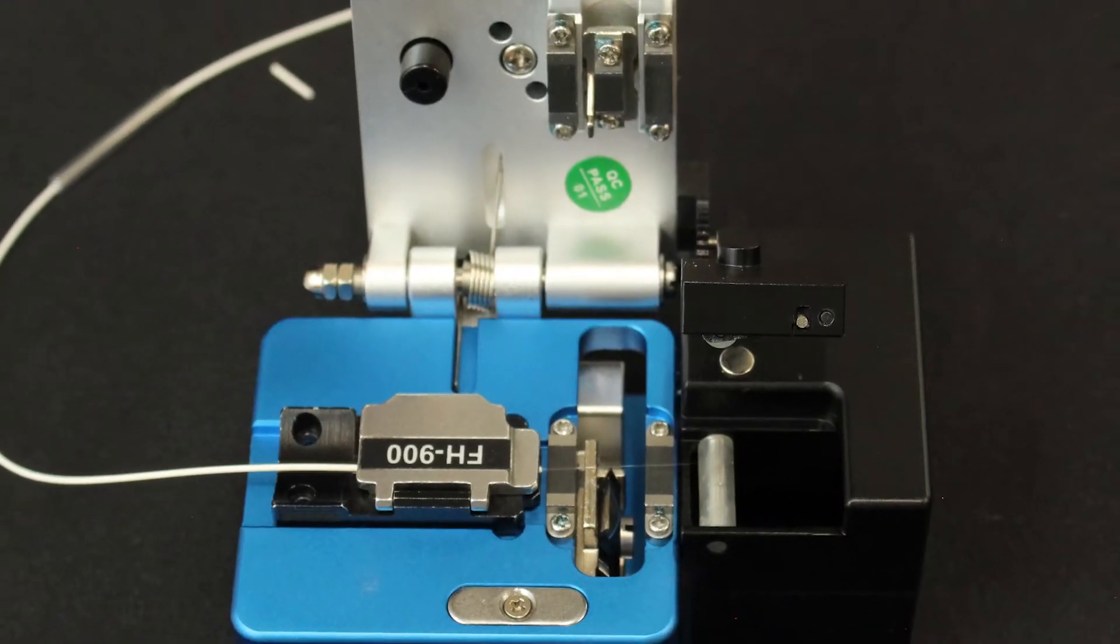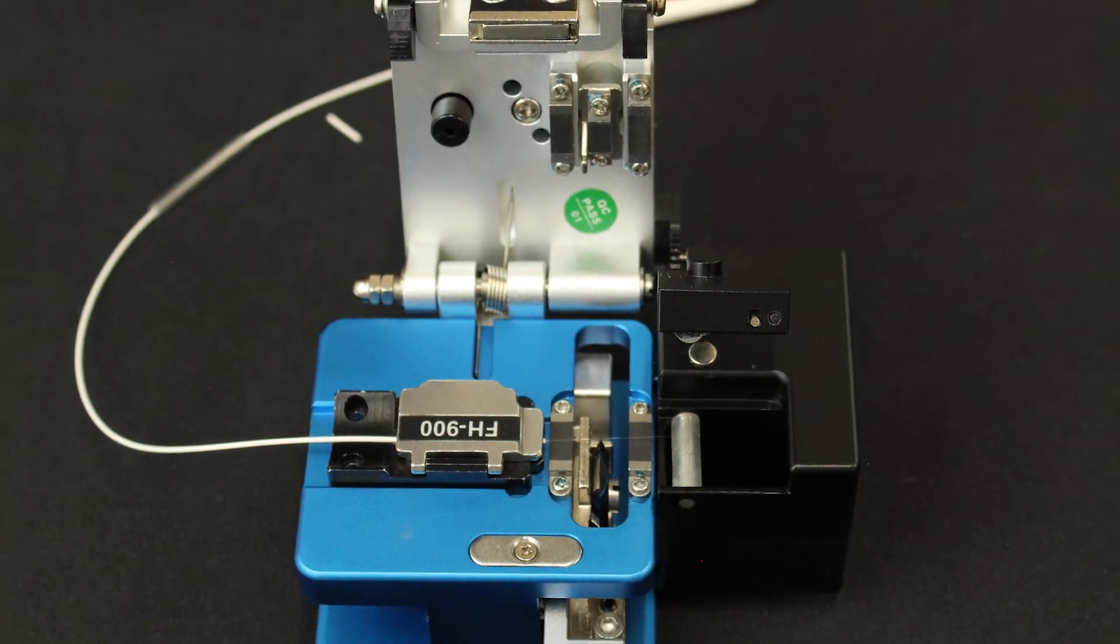The Tempo Communications splice-on connector allows the technician to quickly terminate field fibers with no need for a splice tray or splice patch cords, thereby eliminating half of the fiber preparation time.